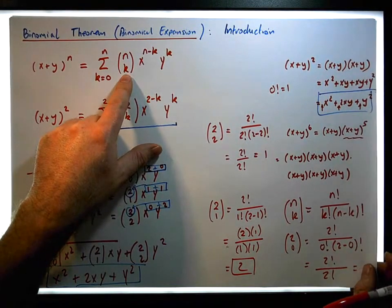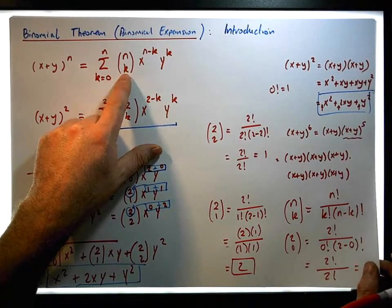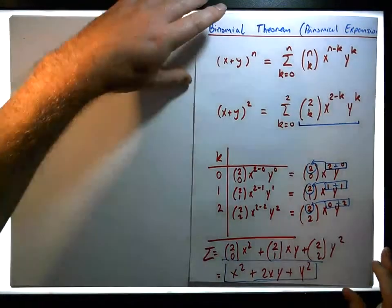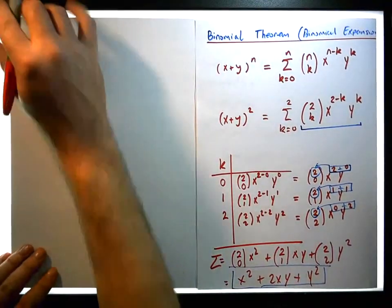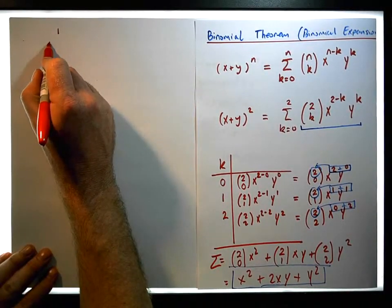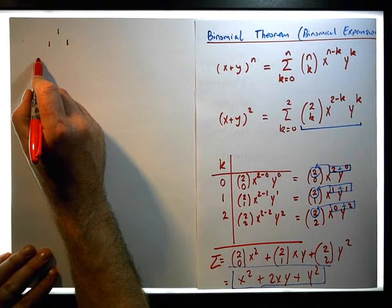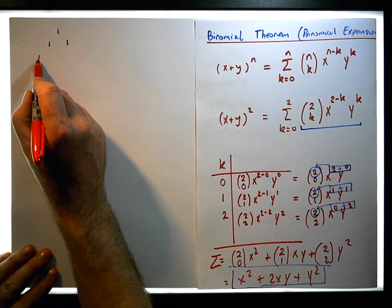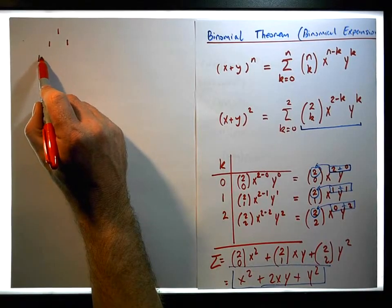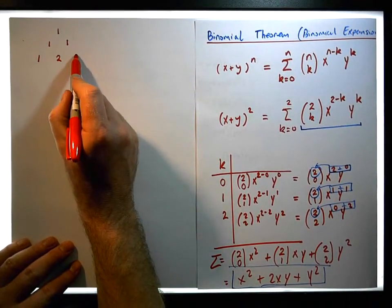The important point about these coefficients is that they are terms in Pascal's Triangle. Let's have a look at Pascal's Triangle. Each row starts with one and ends with one, and then the next term is the sum of the previous two terms. So one plus one gives two. The first row has one entry, the second row has two entries, and the third row has three entries with ones on the outside and the value in the middle being the sum of the previous two.